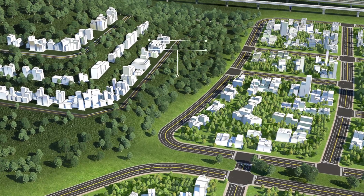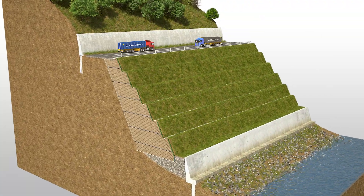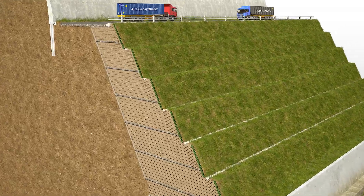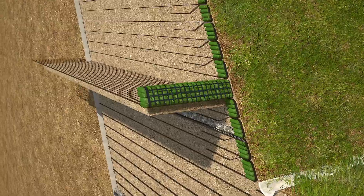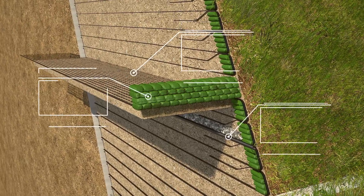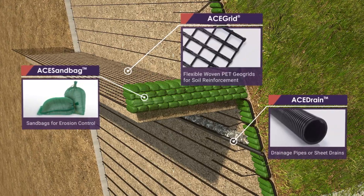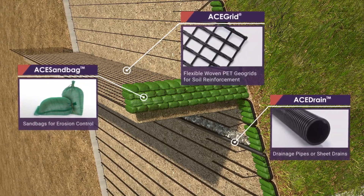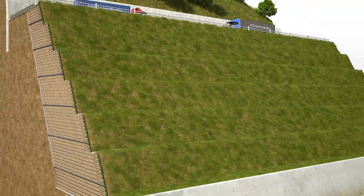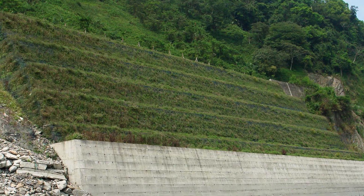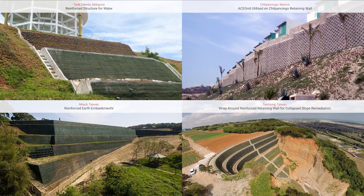Slope Stabilization: The mechanically stabilized earth, composed of ACE grid geogrid, facing system, drainage materials, and backfill soil, has features of easy installation, making use of in-situ materials and vegetation on the facing. Such solution can significantly reduce construction cost and time. It will appear natural and is eco-friendly. It has even higher seismic resistant capability, particularly suitable for environments prone to earthquake.